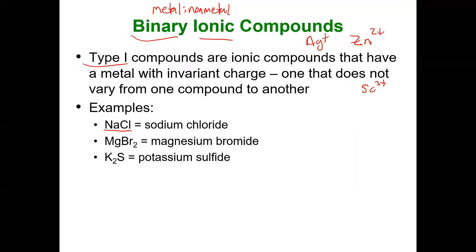Sodium, metal, chlorine, nonmetal. When they come together, sodium chloride. Magnesium, metal, bromine, nonmetal. Come together, binary ionic compound, magnesium bromide. Potassium, metal. How do I know? Left of the staircase, group one. Sulfur, nonmetal, group six A, right of the staircase. So I have a metal and a nonmetal. This is an ionic compound. Potassium sulfide.